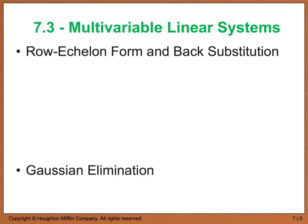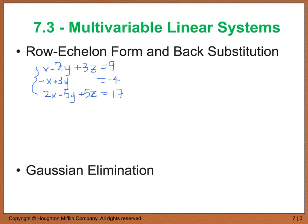You would isolate one variable, back substitute into another equation where you'd find a second variable, then take that answer and back substitute into one of the original equations, and it would give you the third variable. So what we're looking at is a system such as this — you don't have to write this down right now.